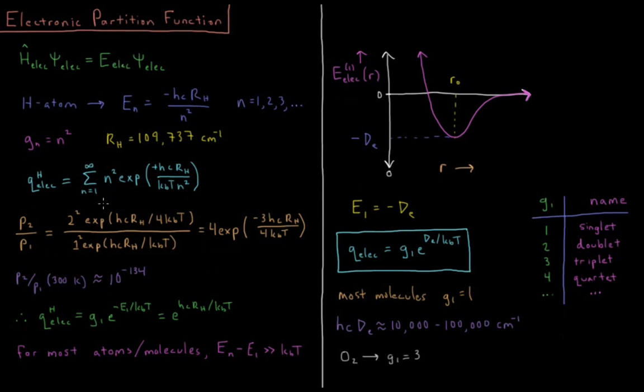For demonstration purposes, let's compute the relative probabilities of an electron being in state 2 versus state 1. What's the energy of the first excited state relative to the ground state? That'd be 2 squared over 1 squared for the degeneracy ratio, e to the hcR over 4kT divided by e to the hcR over kT. So we get 4e to the minus 3/4s hcR over kT.